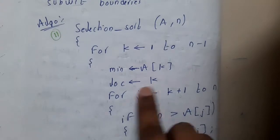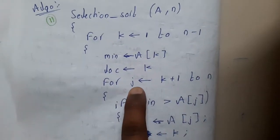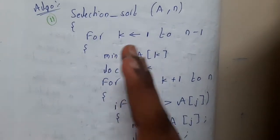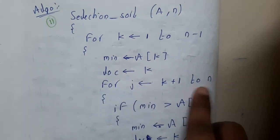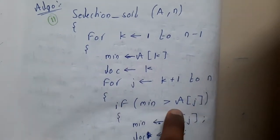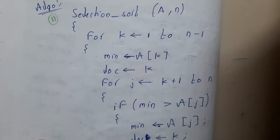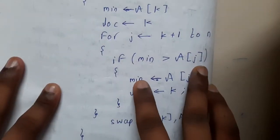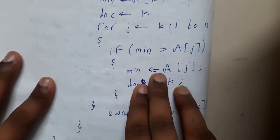For j = k+1 to n. You should only check the next terms, not from the first again. If minimum is greater than A[j], then minimum equals A[j].